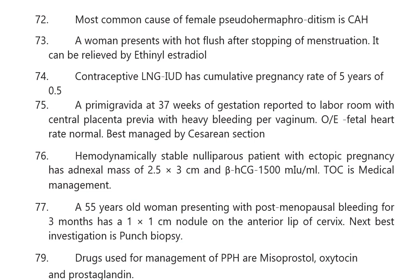The levonorgestrel intrauterine contraceptive device has a cumulative pregnancy rate over 5 years of 0.5. A primigravida at 37 weeks of gestation presenting to the labor room with central placenta previa and heavy bleeding per vagina — with normal fetal heart rate — is best managed by cesarean section.